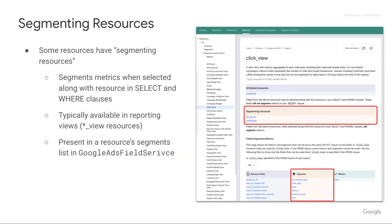Next let's talk about segmenting resources. You've seen a few different types of segments, things like date and device. Certain resources also allow you to segment on other resources. In order to find out if a resource has segmenting resources, you can look at the documentation. These are typically available in reporting views.